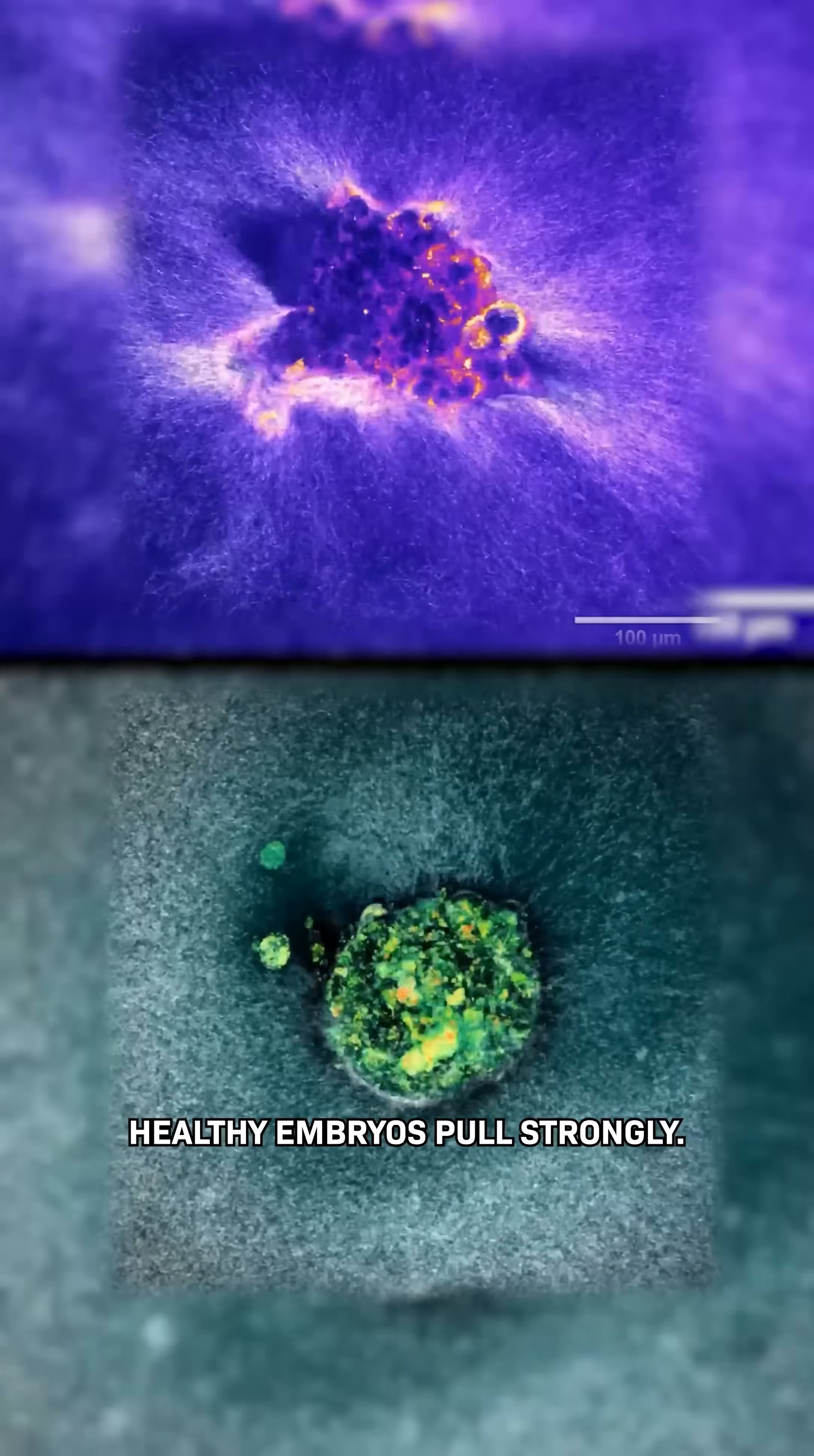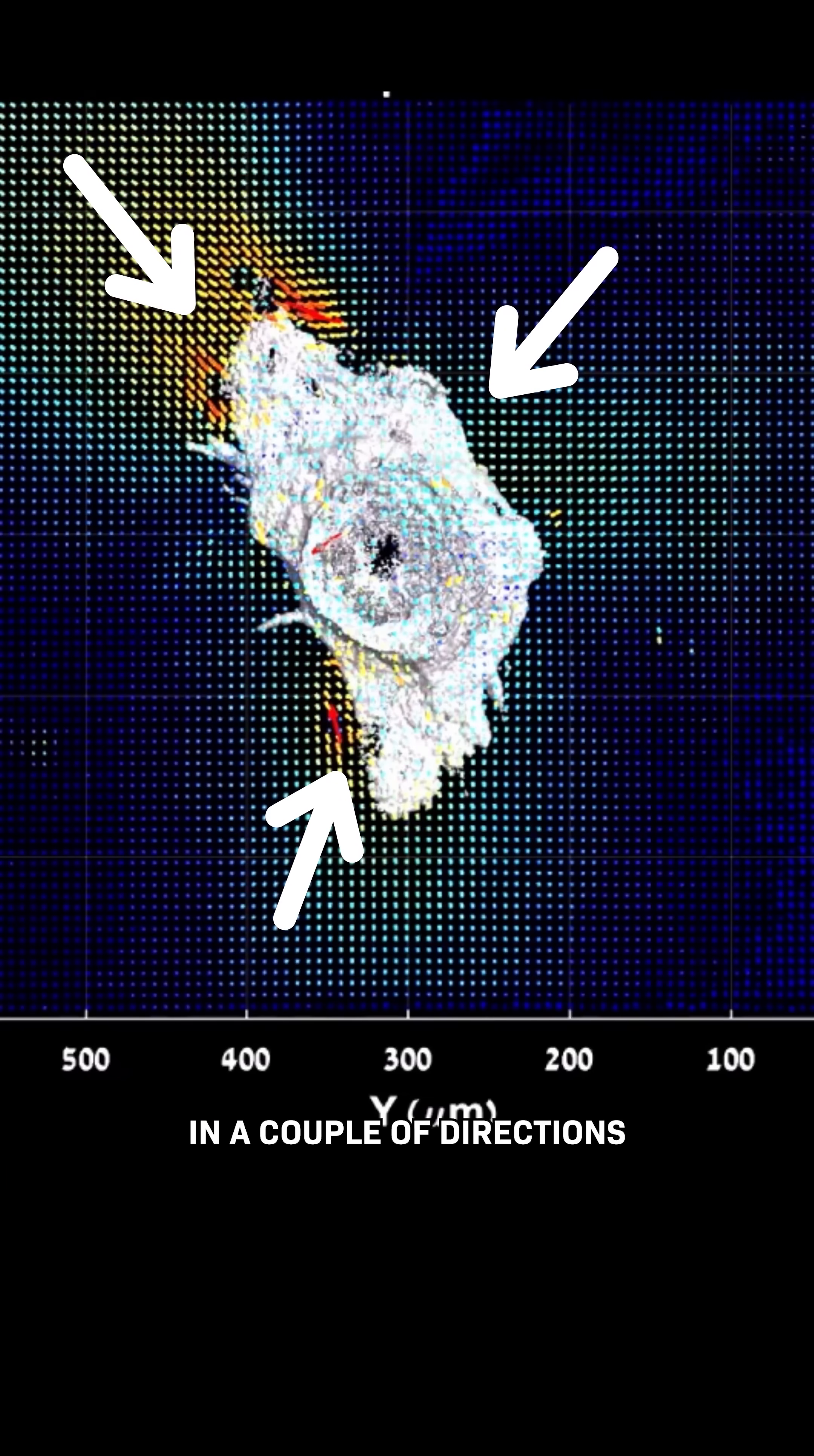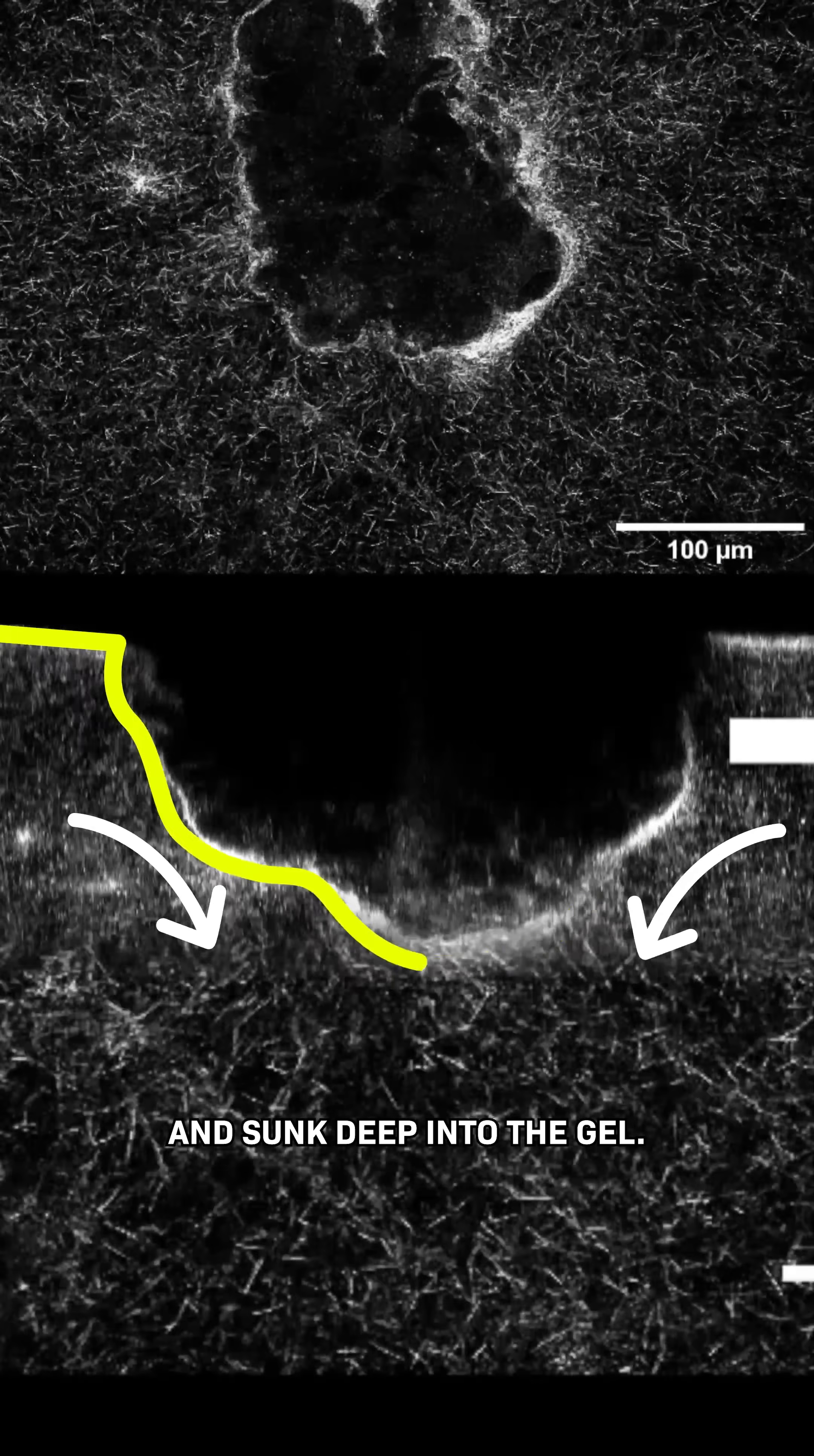Healthy embryos pull strongly. This one even collapses itself and plunges in. Scientists found that mouse embryos only pull in a couple of directions and stay mostly on the surface of the gel, while the human embryo pulled all over the place and sunk deep into the gel.